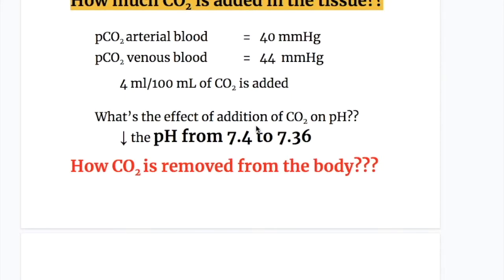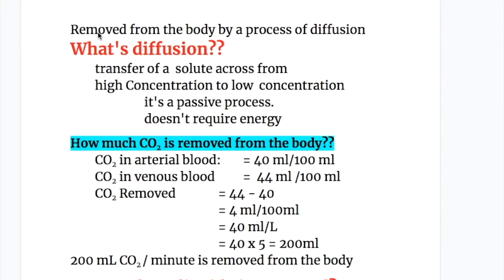What is the effect of addition of carbon dioxide on pH? It decreases the pH from 7.4 to 7.36. Carbon dioxide is removed from the body by the process of diffusion.